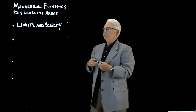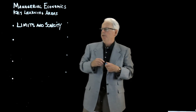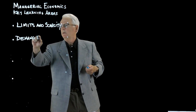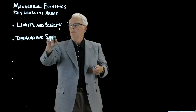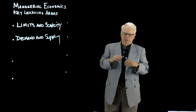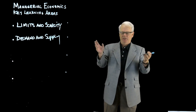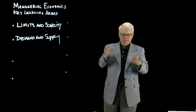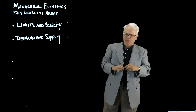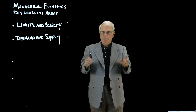The second, and probably one of the most significant contributions in economics, is the theories of demand and supply. Demand and supply can explain almost anything in economics. A demand curve is a downward sloping curve — the lower the price, the more people want.